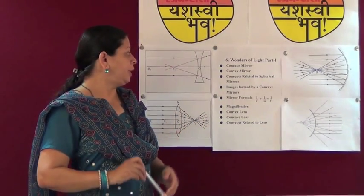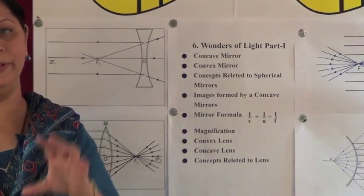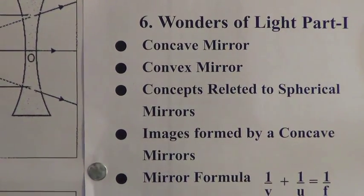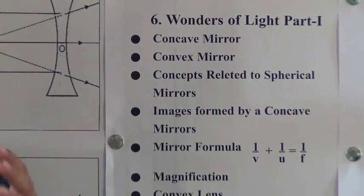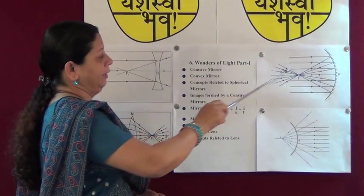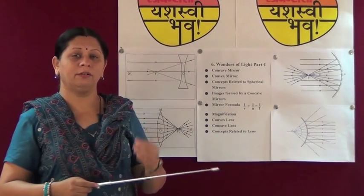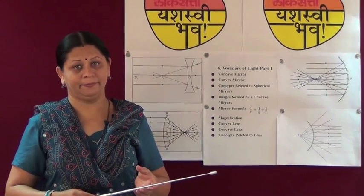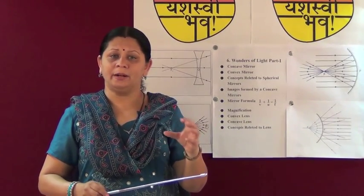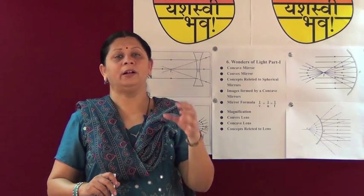Now let us see what are spherical mirrors — concave mirror and convex mirror. Spherical mirrors are parts of a sphere. A concave mirror is a part of a spherical glass whose inner side is coated with a reflecting layer, and rays coming to the inner part are reflected to converge. So this concave mirror is also called a converging mirror. When all rays of light come and meet in one point, that is called convergence of light.